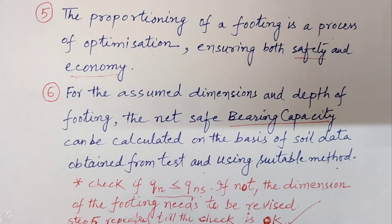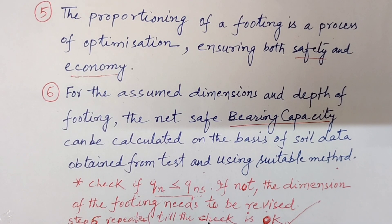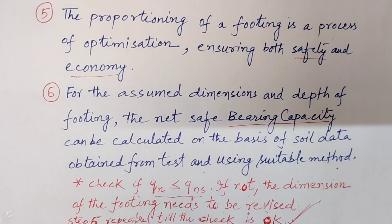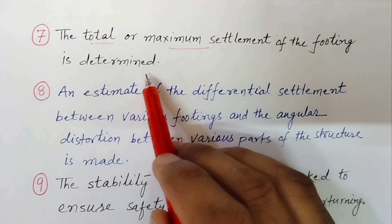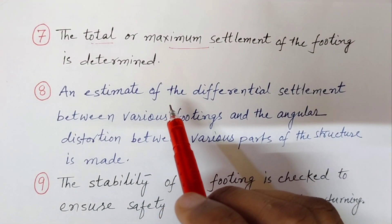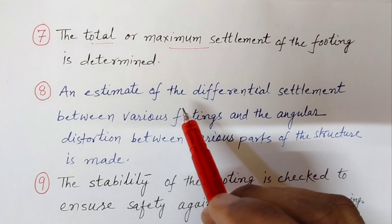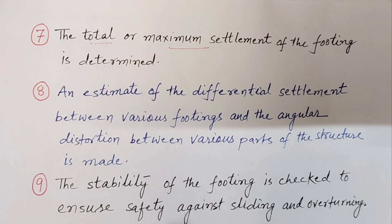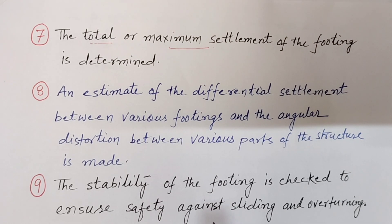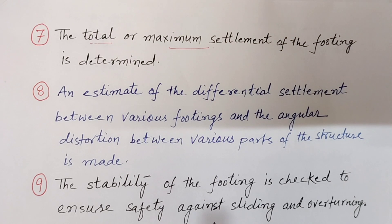Check if Qn is less than or equal to Qns. If not, the dimensions of the footing need to be revised upward and the step is repeated until the check is satisfied. The total or maximum settlement of the footing is determined using a suitable method. The shape bearing capacity calculated in the previous step is used as the pressure-inducing settlement in the settlement computation. Settlement in clay soil is determined with the shape bearing capacity assumed to act at the base of the footing, using consolidation test data.